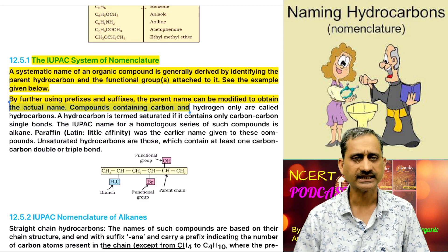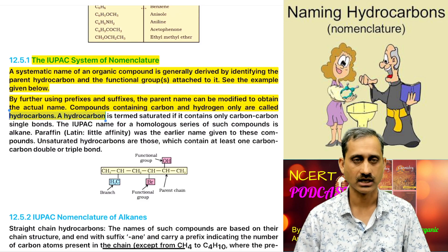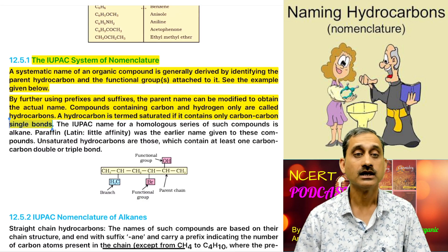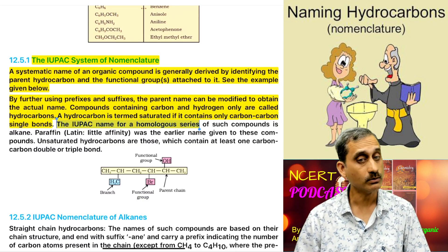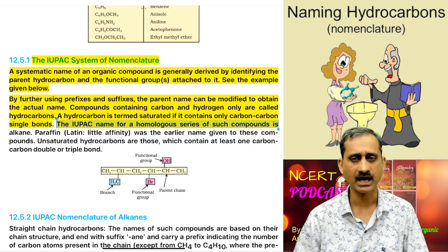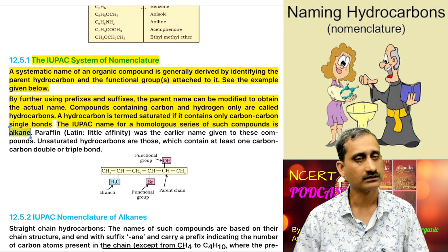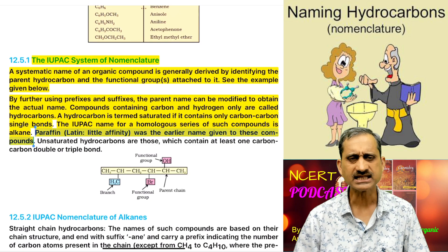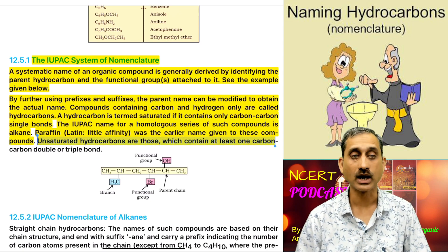Compounds containing carbon and hydrogen only are called hydrocarbons. A hydrocarbon is termed saturated if it contains only carbon-carbon single bonds. The IUPAC name for a homologous series of such compounds is alkane. Paraffin — Latin for 'little affinity' — was the earlier name given to these compounds. Unsaturated hydrocarbons are those which contain at least one carbon-carbon double or triple bond.